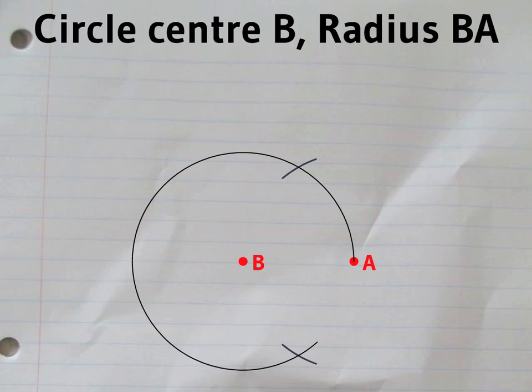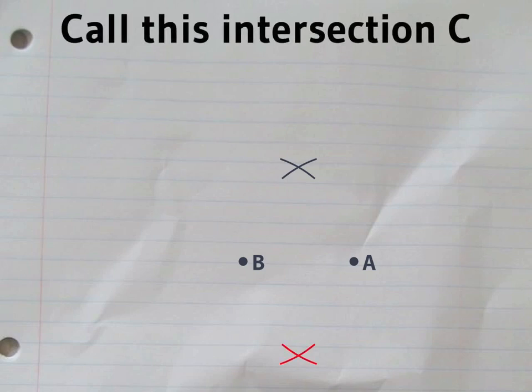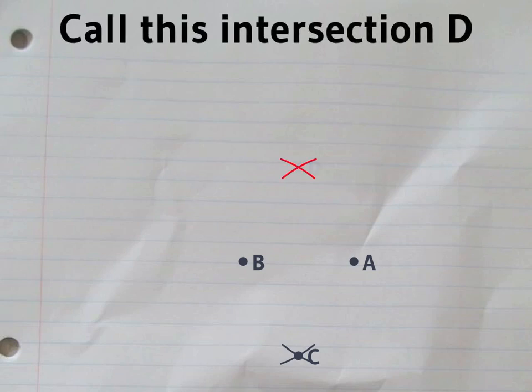We'll also need the circle with the same radius centered on B. Call this intersection C. And call this intersection D.